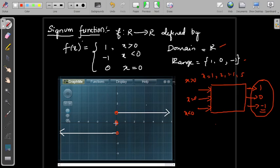For 0, it is 0. x value 0 means y is also 0. For any value greater than 0, it is equal to 1. This is y equal to 1.